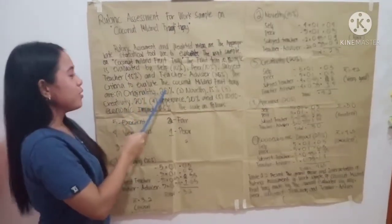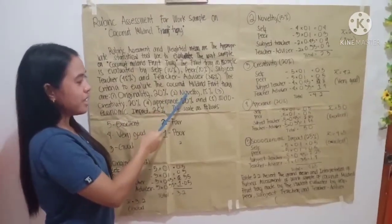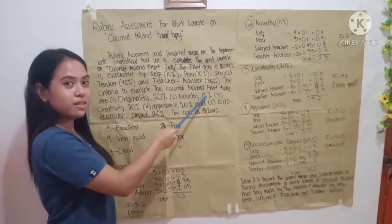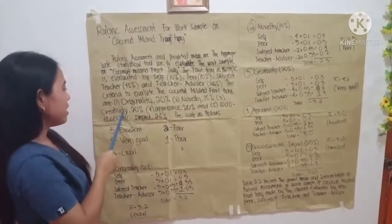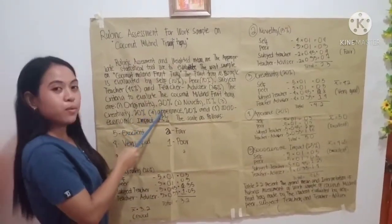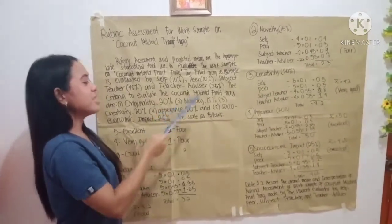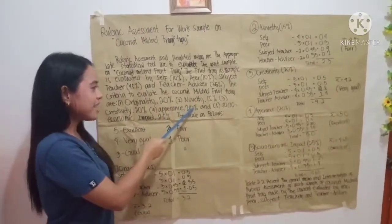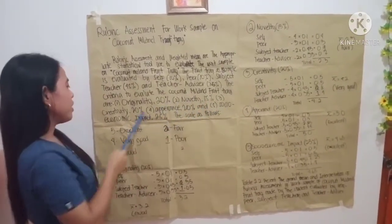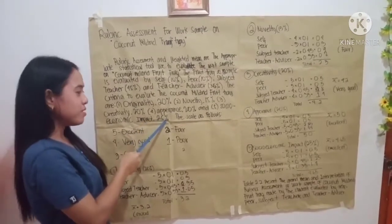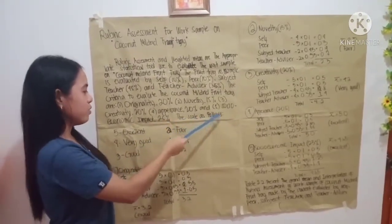The criteria to evaluate the coconut mildred fruit tray are: Number 1, originality, 20%; novelty, 15%; Number 3, creativity, 20%; Number 4, appearance, 20%; and Number 5, socioeconomic impact, 25%.